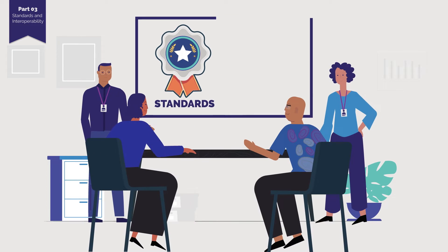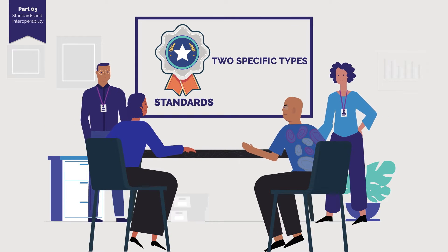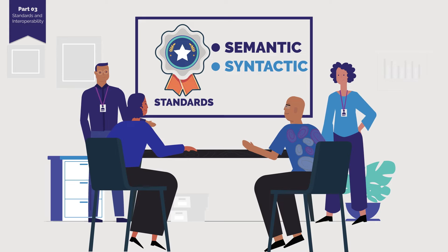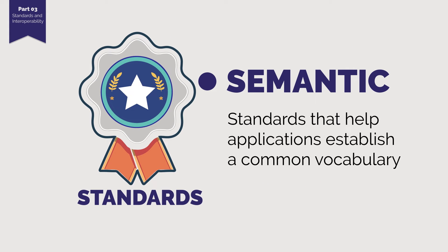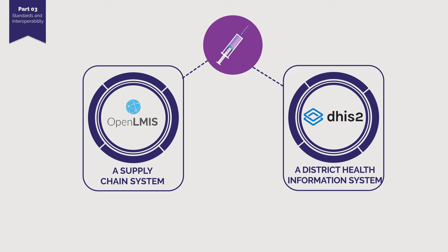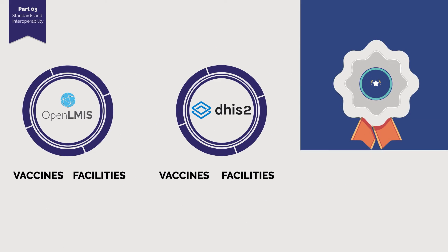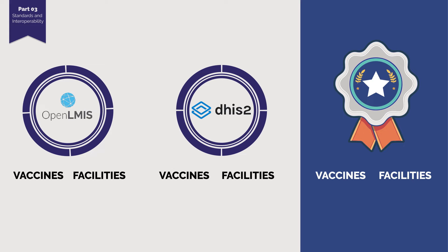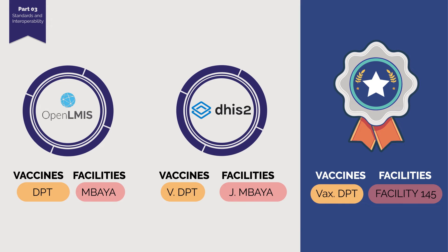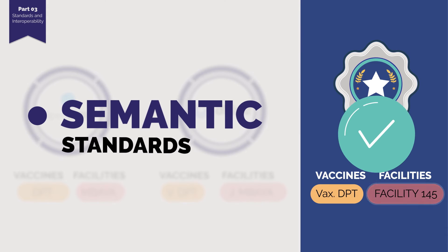The software development team instructs Lucy and Isaac on the importance of two specific types of standards to enable interoperability: semantic and syntactic. Standards that help applications establish a common vocabulary are known as semantic standards. For the two applications Lucy and Isaac are using in their immunization campaign, they need to agree on two vocabulary lists in order for the applications to communicate — one for the vaccines and one for facilities. For example, the semantic standard to refer to the DPT vaccine is vax.dpt, and for the Mbio Clinic health facility is Facility 145. Once they agree on a semantic standard, they both use the same terms to describe the same commodity.